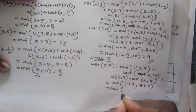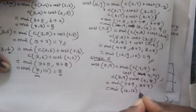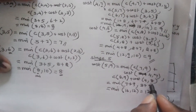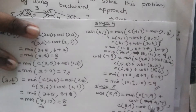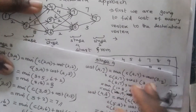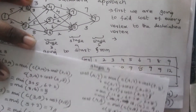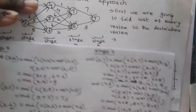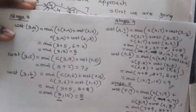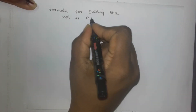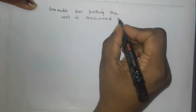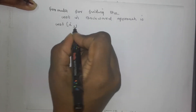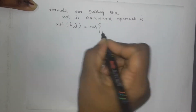The formula used is: cost(i, j) = minimum over L of [ cost(i−1, L) + C(L, j) ], where L belongs to V(i−1) and edge (L, j) belongs to E.